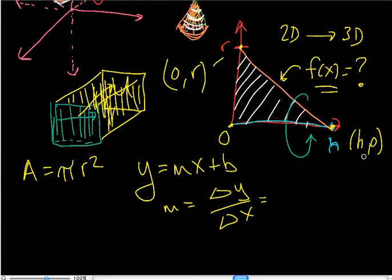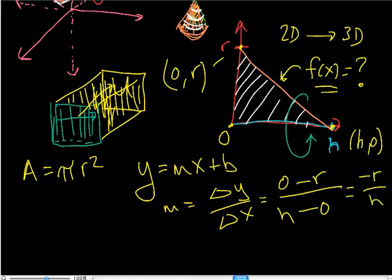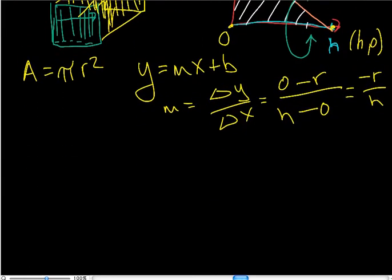Well, it is the second Y, which is 0. It has no height, minus the first Y, which is R, divided by the second X, which is H, minus the first X, which is 0, which simplifies to negative R over H. So that's the M part of this formula.